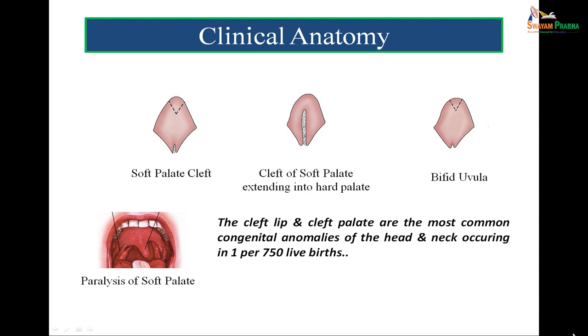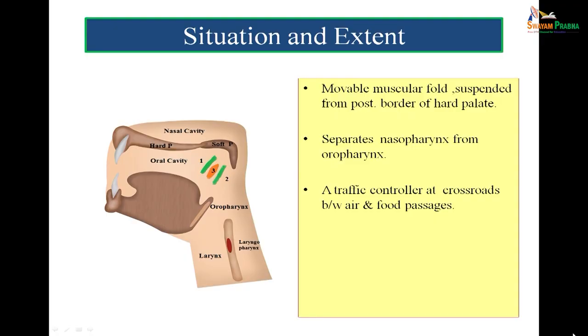The soft palate has a vital role to play. It is a muscular ridge whose function is to control traffic and provide normal physiological phenomena. The soft palate is a movable muscular fold suspended from the posterior border of the hard palate. It separates the nasopharynx from the oropharynx — a traffic controller at the crossroads between air and food passages. In the figure, the hard palate is in front, and at its posterior border the soft palate is there, with part going backwards and part going downwards.